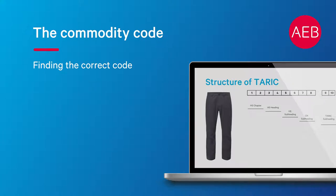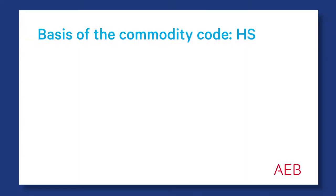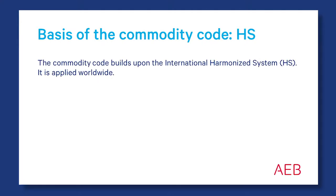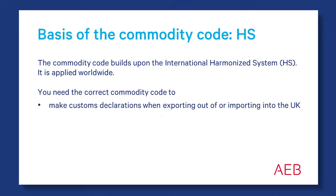The Commodity Code: How to find the correct code. You'll need a commodity code to make your customs declaration when you bring goods in or out of the UK. This includes goods sent to you from abroad.